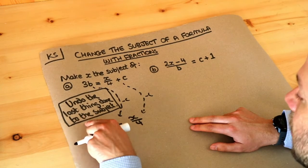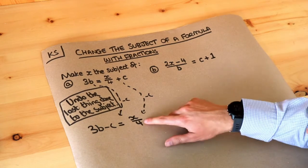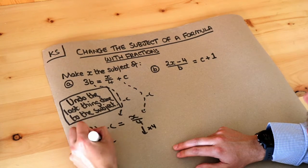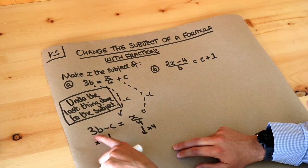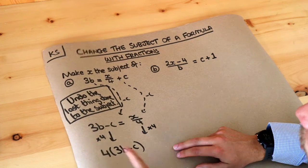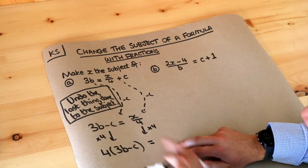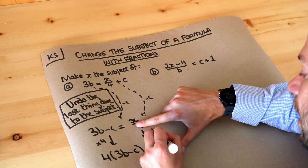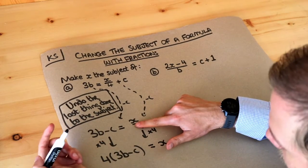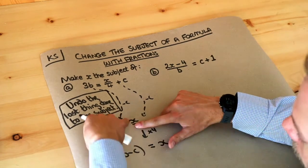Now let's apply the same thing, undo the last thing done to the subject. x was divided by 4, so we want to undo the over 4. The opposite of divide by 4 is times by 4, so we multiply both sides by 4. Times the whole thing by 4 gives 4 brackets 3b minus c. When we times this by 4, it just gets rid of the over 4 leaving x. A common error is that students times by 4 again and think the answer is 4x, but that would be times by 4 twice. You only want to times by 4 once, leaving just x.